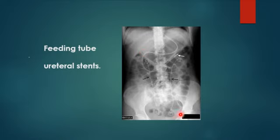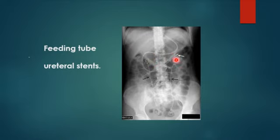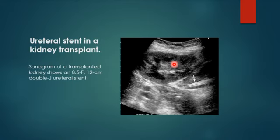This patient has bilateral double-J stents and also a feeding tube — a longer nasogastric type passing from the duodenum to the jejunum, which is normal positioning. On ultrasound, double-J stents appear as two echogenic lines in the ureter and in the bladder.